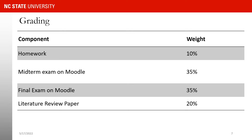You can see the weight of each component in your final grade on your syllabus. Homework will have a 10% weight, your midterm exam 35%, final exam 35%, and a literature review paper 20%. The literature review paper differs slightly between undergrad and grad students in terms of the number of papers covered. Midterm and final exam dates are on Moodle.